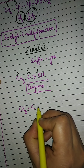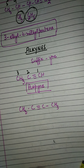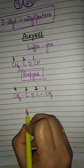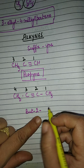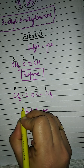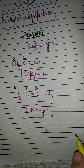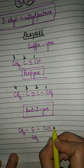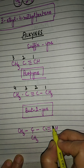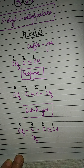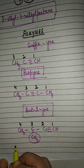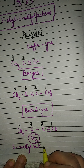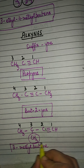Let's take another example. If the triple bond is present in the center of the compound, we can start numbering from either side: 1, 2, 3, 4. The word root is 'bute', and the triple bond is at position number 2, so the name is but-2-yne. Similarly, if there is a substituent — suppose the compound is CH₃C(CH₃)(triple bond)CH — the triple bond should get the least position: 1, 2, 3, 4. First write the substituent with its position: '3-methyl', then the word root 'bute', then suffix 'yne'. So the name is 3-methylbutyne.